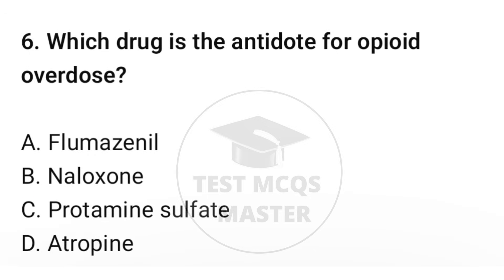Question number six: which drug is the antidote for opioid overdose? The correct option is B: Naloxone.